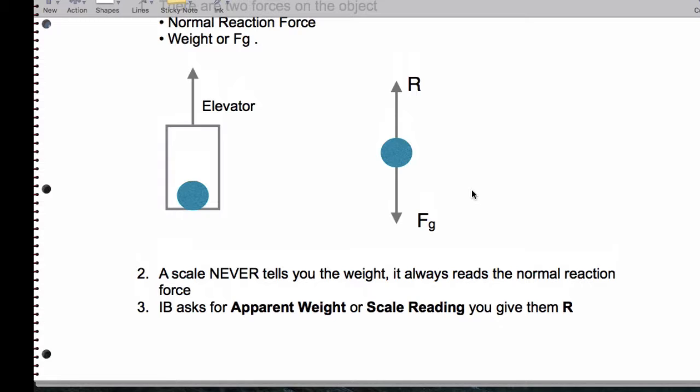First of all, there's this thing called the apparent weight, which is what the weight seems to be, which is what the scale reading is. And then there's the real weight. The real weight is the force of gravity on the object. The real weight is always m times g. This never changes. And this actually can change.